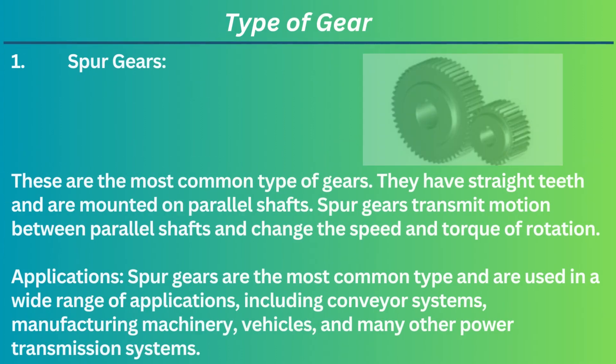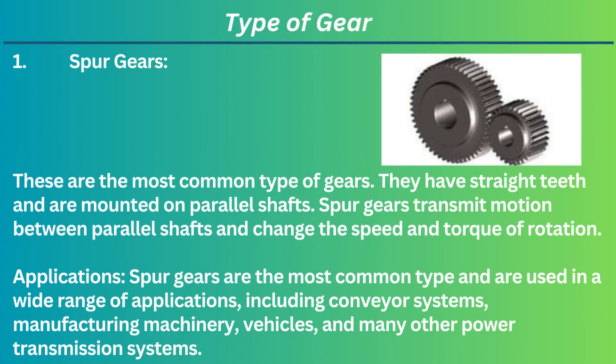1. Spur gears. These are the most common type of gears. They have straight teeth and are mounted on parallel shafts. Spur gears transmit motion between parallel shafts and change the speed and torque of rotation. Applications: Spur gears are used in a wide range of applications, including conveyor systems, manufacturing machinery, vehicles, and many other power transmission systems.